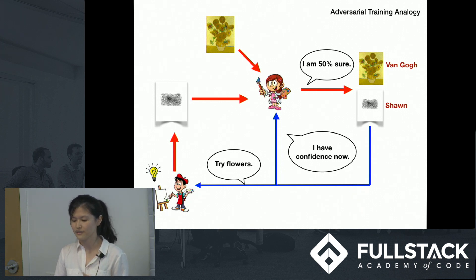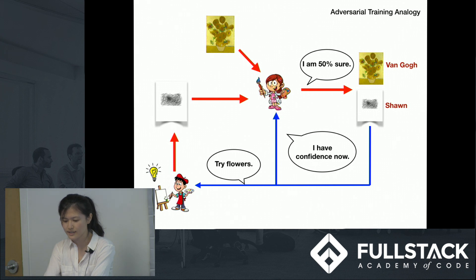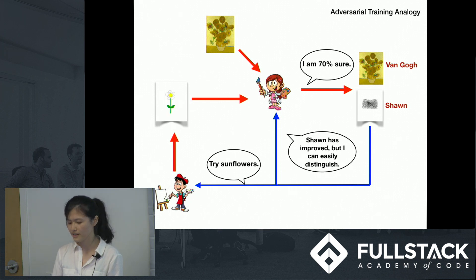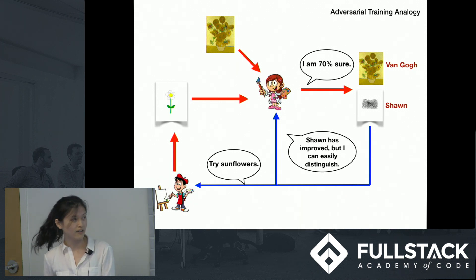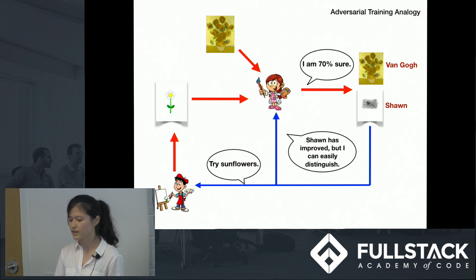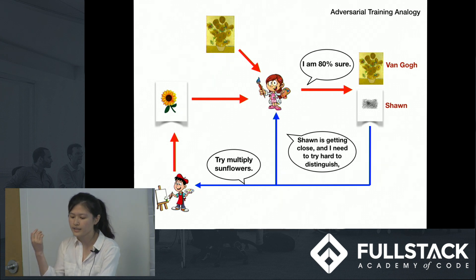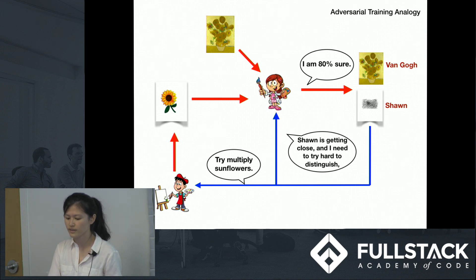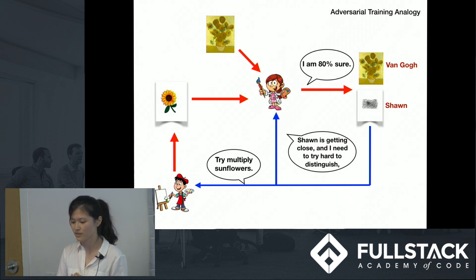Because of the lack of experience, at the first round, Lily only has 50% confidence to distinguish the two paintings. After looking at the feedback, Lily improves her identification skills. At the same time, Sean receives a hint from Lily, so in the second round, Sean draws a flower, and Lily has more confidence to identify the two paintings. Following this pattern, Sean can draw a painting that matches the Sunflower. This process ends when Sean dramatically improves his skill at drawing Sunflowers, and Lily also improves her identification skills, but finds it hard to differentiate the two paintings.